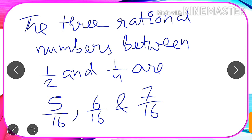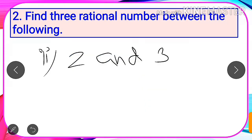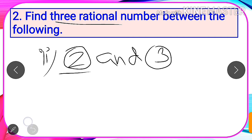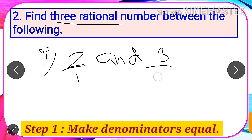Now let us take another example to understand this better. Let us find three rational numbers between 2 and 3. Both 2 and 3 are rational numbers because they can be written as 2 by 1 and 3 by 1, where the numerators and denominators are integers and the denominators are not equal to zero. The denominators of both numbers are already the same, so we do not need to make them equal.